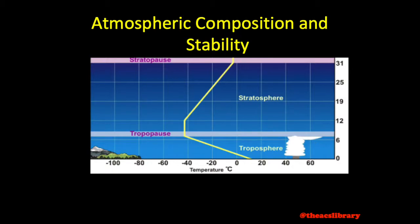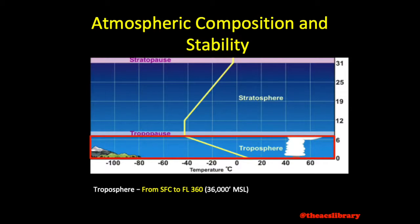The layer just above the Earth's surface is known as the troposphere. Extending from the surface to roughly 36,000 feet high, the troposphere is where nearly all weather occurs. Following the yellow temperature trend line, we see that the troposphere is characterized by a decrease in temperature for any increase in altitude.